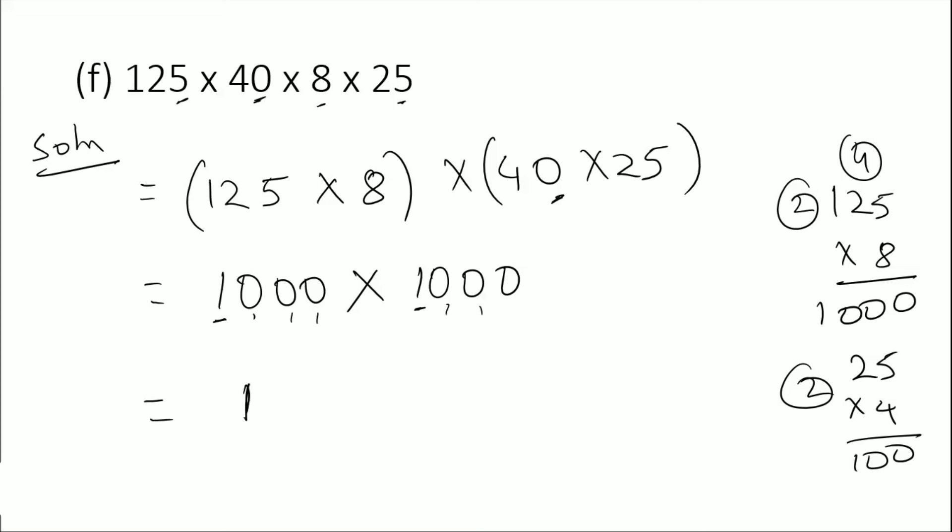1000 times 100, so 1 times 1 is 1 and there are six zeros. The answer is 1,000,000. This is the solution for F.